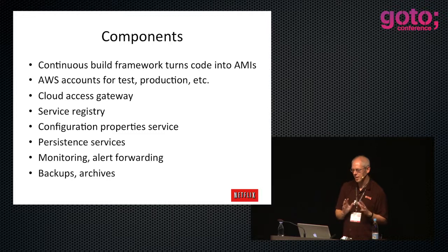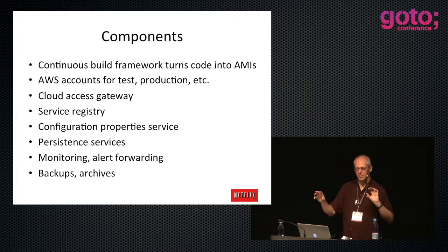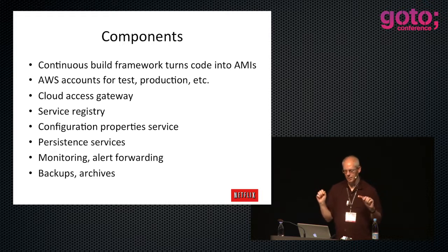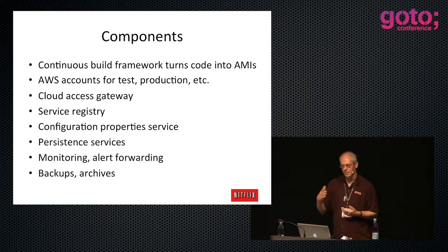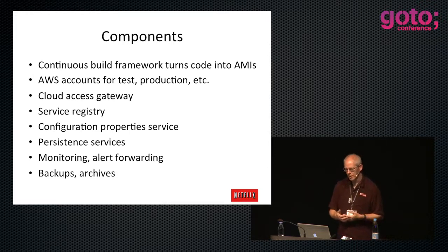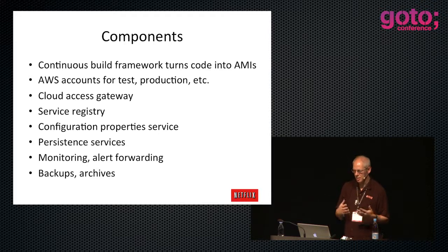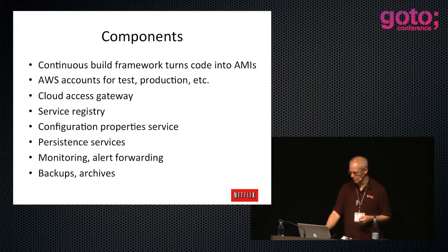Amazon accounts: we split our accounts by test and production. We have a production account that's global and a test account that's global. We have a gateway for getting into the cloud, some auditing and controls, a service registry, configuration property service, persistent services, monitoring, alert forwarding, backups, and archives. With all those pieces you can just start deploying code and building your own service on top.